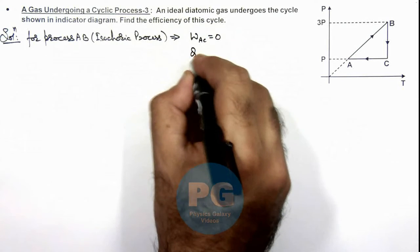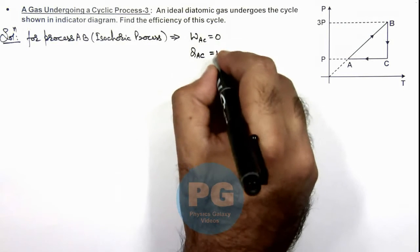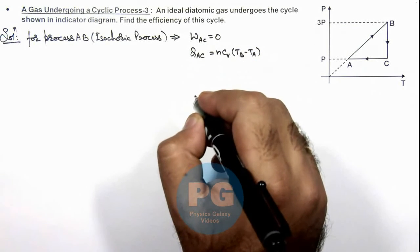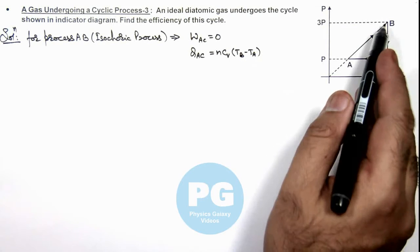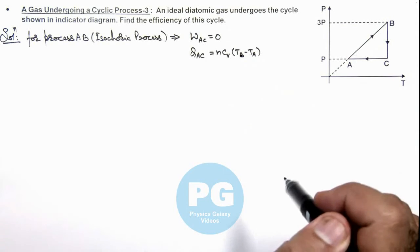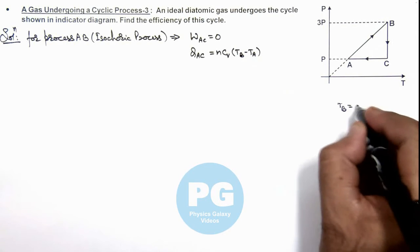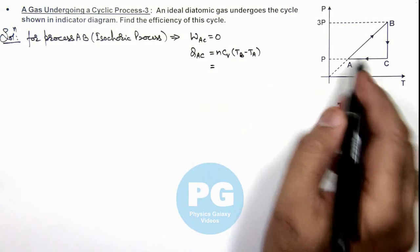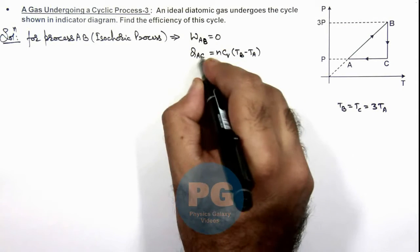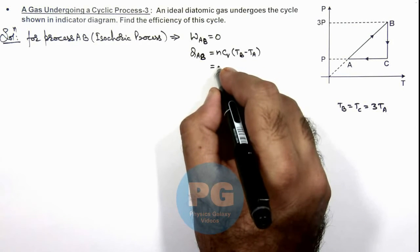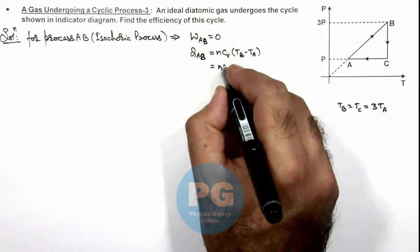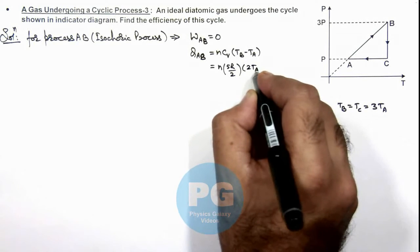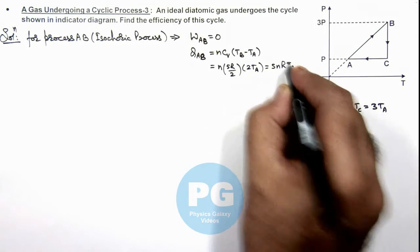And if we calculate the heat supplied to the gas in process AC, this will be equal to n cv delta T, which is TB minus TA. So here in terms of TA we can write, as here pressure is increased to 3 times, as volume is constant, temperature will also become 3 times. So here we can write TB is equal to TC is equal to 3 times TA. So if we substitute it here, this will give us the heat supplied in the process AB. Here we are talking about the process AB, so in this process AB it is n, and the value of cv for a diatomic gas we can write as 5R/2, multiplied by TB we can write as 3TA, so it will be 2TA, which gives us the value 5nRTA as the heat supplied in the process A to B.